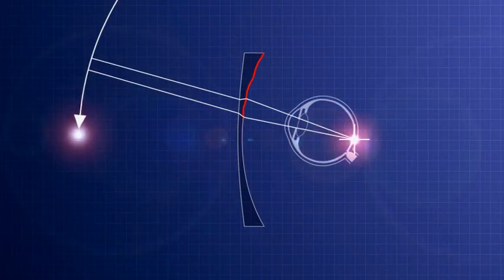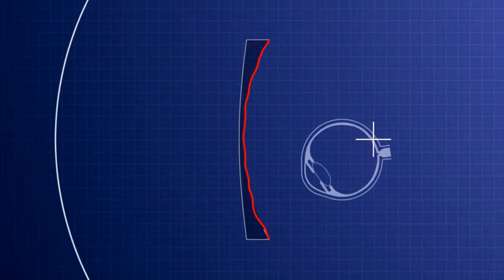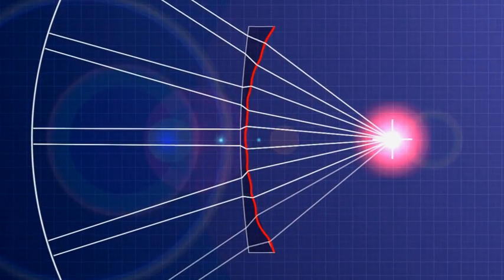This procedure is repeated for every direction of sight until the entire back surface of the lens is adjusted and all simulated beams focus in the fovea.